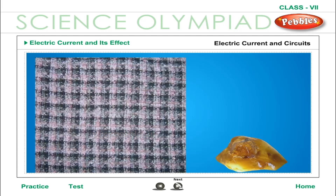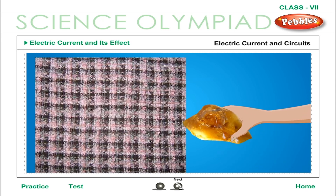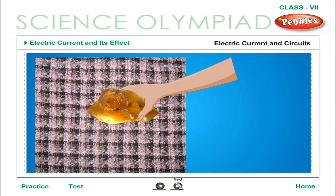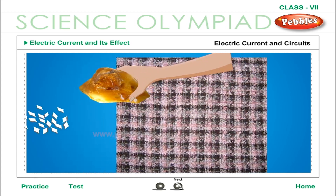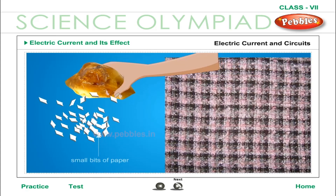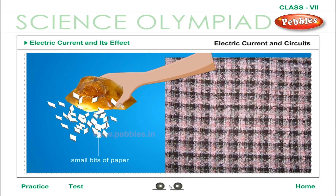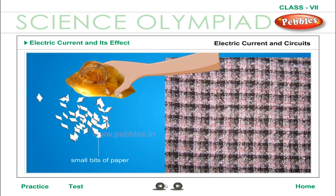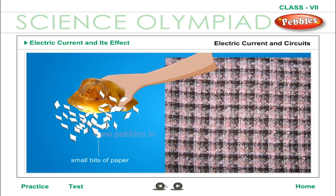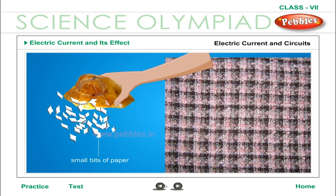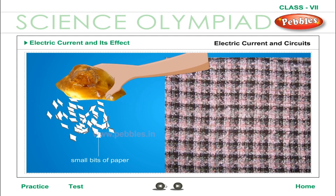Electric current and circuits: the word electricity comes from the Greek word 'electron', which means amber, a kind of resin. When amber was rubbed with wool, it acquired the property of attracting small bits of paper or cork. Besides amber, there were many other substances such as glass, sealing wax, plastic, and nylon which also acquire this attractive property when rubbed with suitable substances. These substances were called 'electrics'.